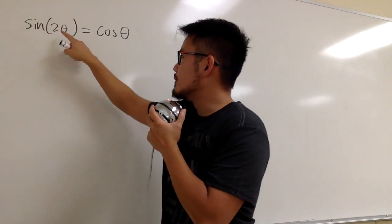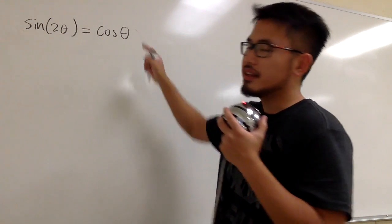Let's solve this tricky equation. We have sine of 2θ that's equal to cosine of θ. What should we do?